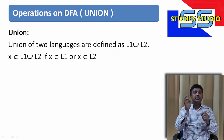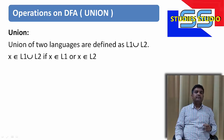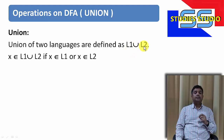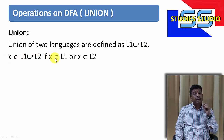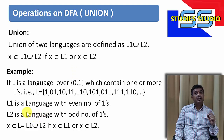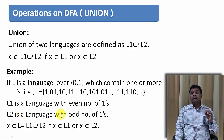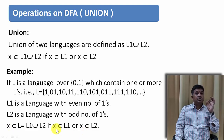Let us discuss about the first operation, that is union. The union is same as the set operation. If two languages L1 and L2 are given and I want to find their union, I write it as L1 union L2. A string belongs to L1 union L2 if it belongs to either L1 or L2. For example, if L1 has even number of ones and L2 has odd number of ones, a string from their union will have either even or odd number of ones.